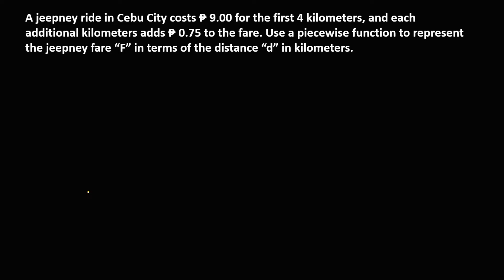In this problem, for the first 4 kilometers, the fare is 9 pesos. So if the distance is 2 kilometers, the fare is 9 pesos. If the distance is 3 kilometers, the fare is 9 pesos. And if the distance is 4 kilometers, the fare is also 9 pesos — because for the first 4 kilometers, the fare is fixed at 9 pesos.